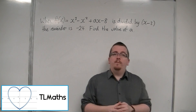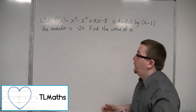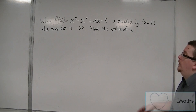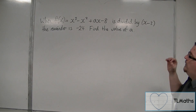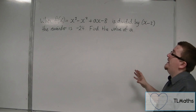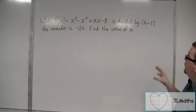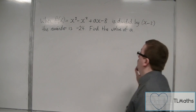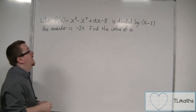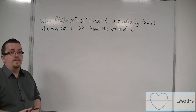This is a similar problem to the one in the previous video, this time using the remainder theorem. When f of x equals x cubed minus x squared plus ax minus 8 is divided by x minus 2, the remainder is minus 24. Find the value of a.